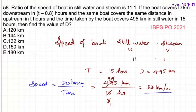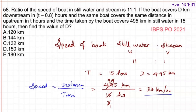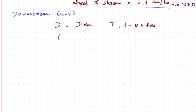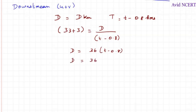The boat covers d kilometers downstream in t minus 0.8 hours. For downstream, speed equals u plus v. Applying speed equals distance by time: 33 plus 3 equals d divided by (t minus 0.8). By cross multiplication: d equals 36 times (t minus 0.8), which gives d equals 36t minus 28.8.